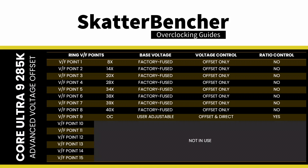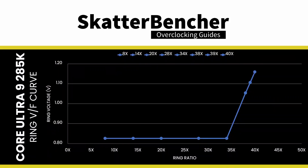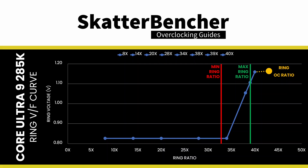The final OC ratio's base voltage will be the manually set adaptive voltage. In theory, you can define three ratios for the ring: the OC ratio for VF point 9, the minimum ring ratio, and the maximum ring ratio. The OC ratio will ultimately define the shape of the ring VF curve, whereas the minimum and maximum ring ratio determine the allowable clock range for the ring.